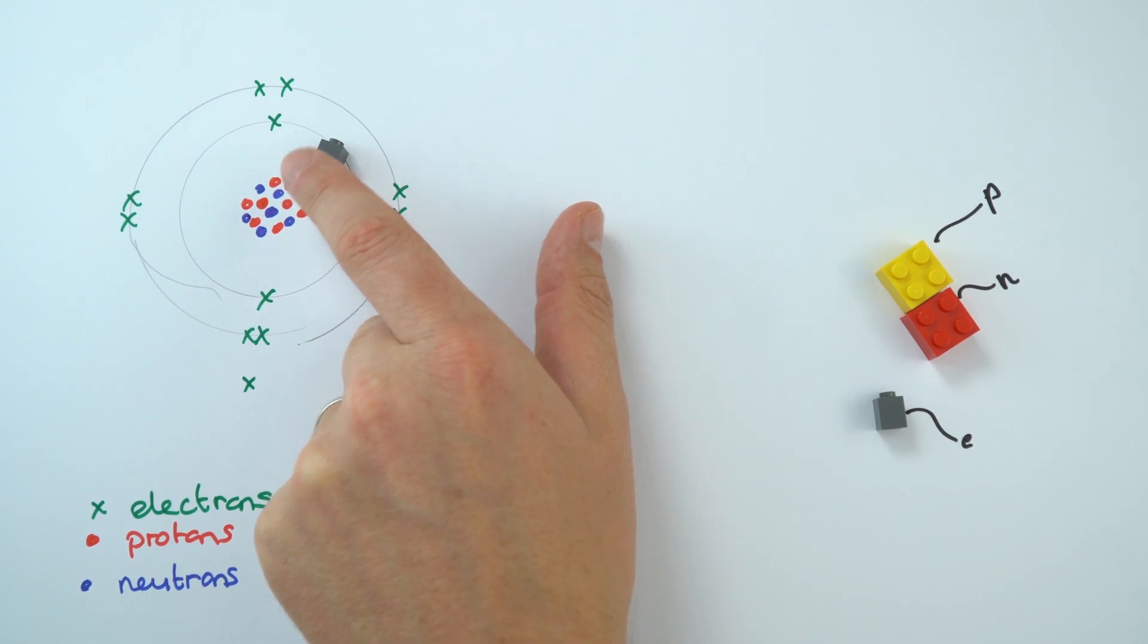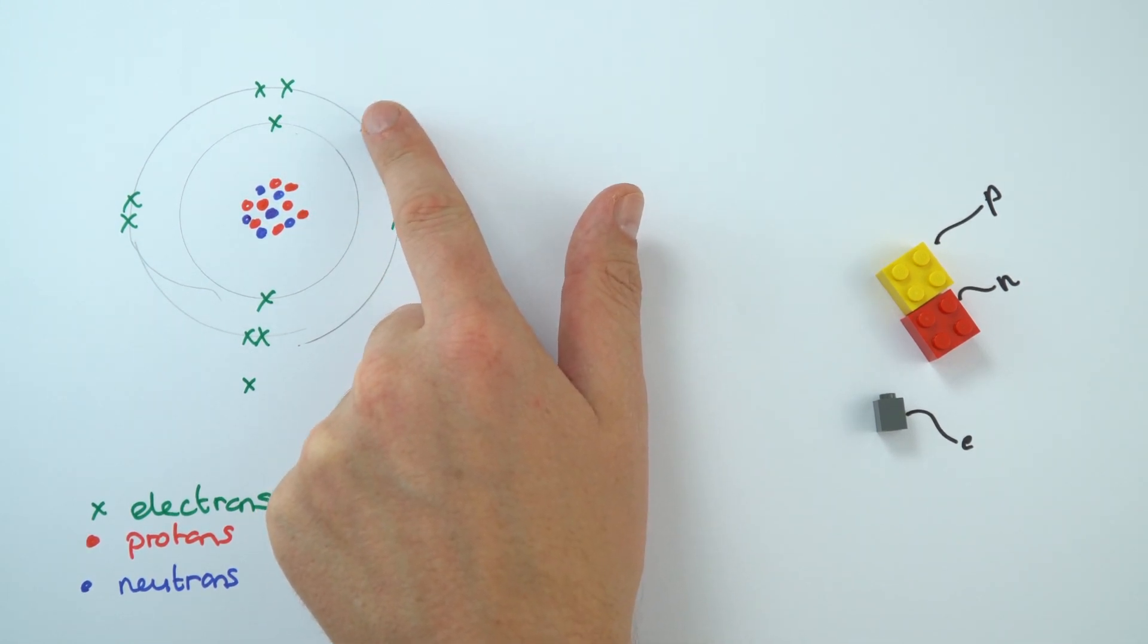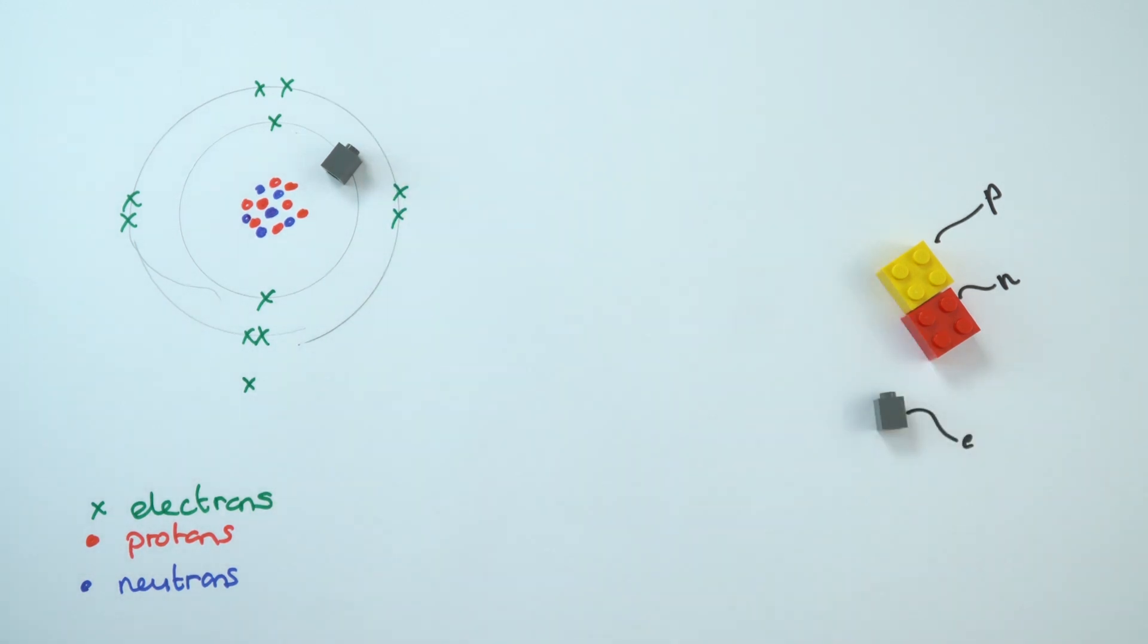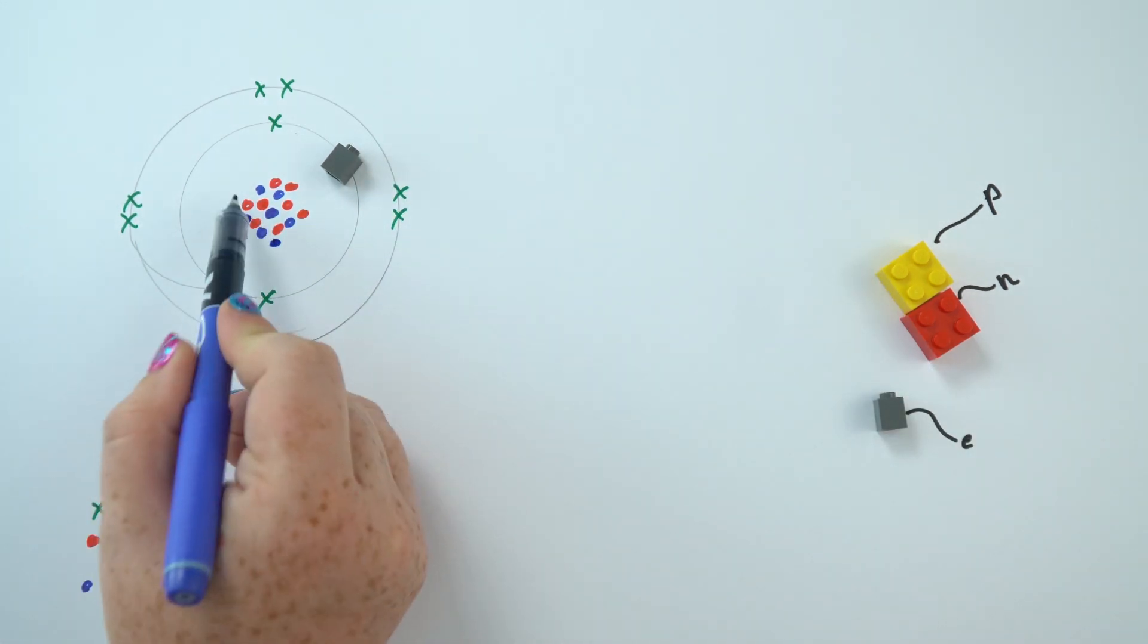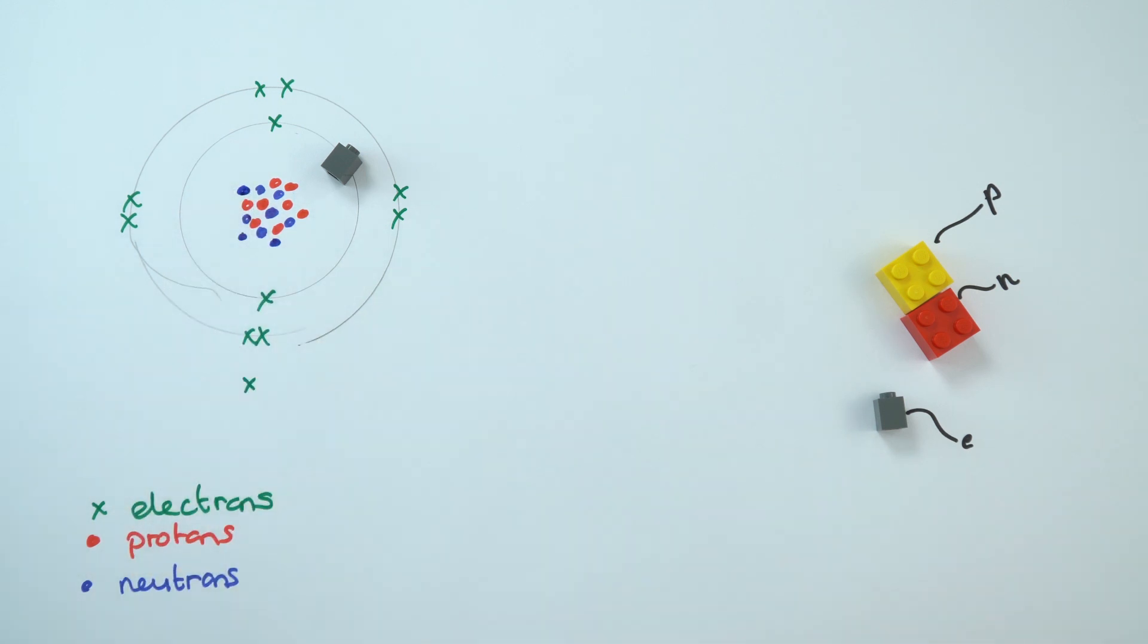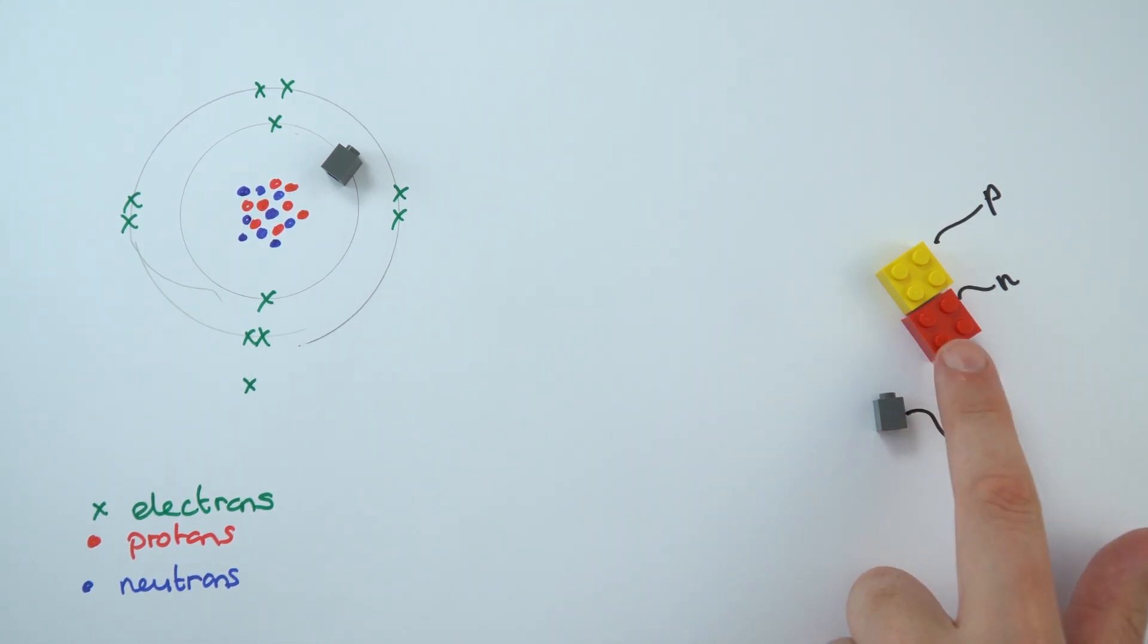So for example it might absorb some energy and it might jump up to an outer shell and then as it loses energy it then gives out some electromagnetic radiation. But apart from that, the model that we use in physics is pretty straightforward. We don't really need to think about the chemical properties of different elements and actually what we're more interested in often is the very inside part, the nucleus.